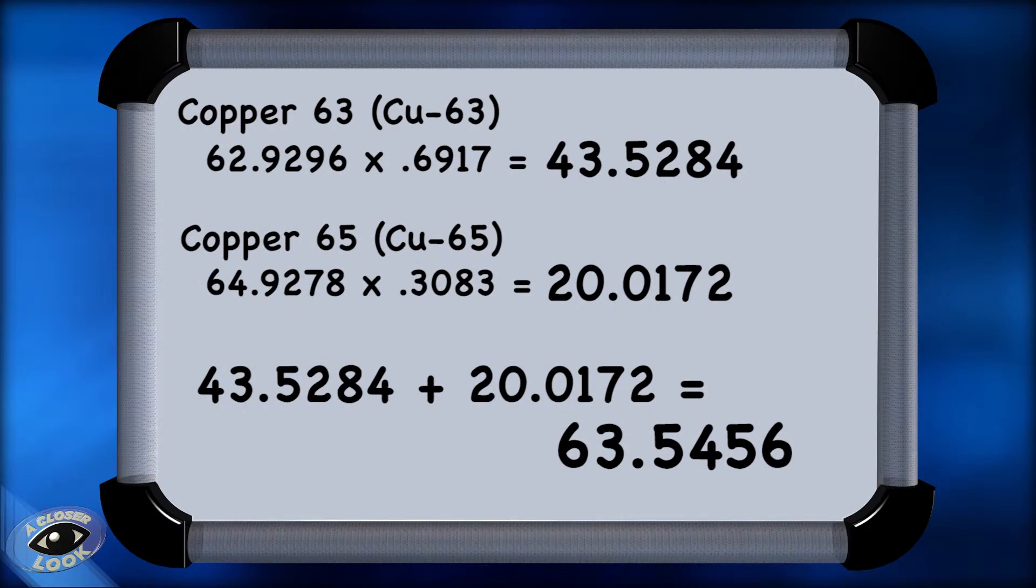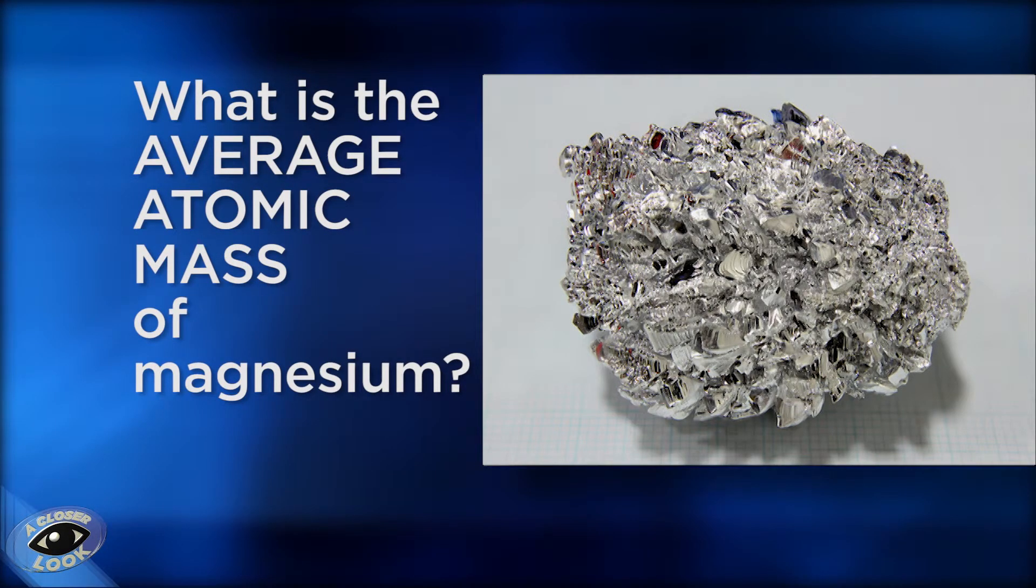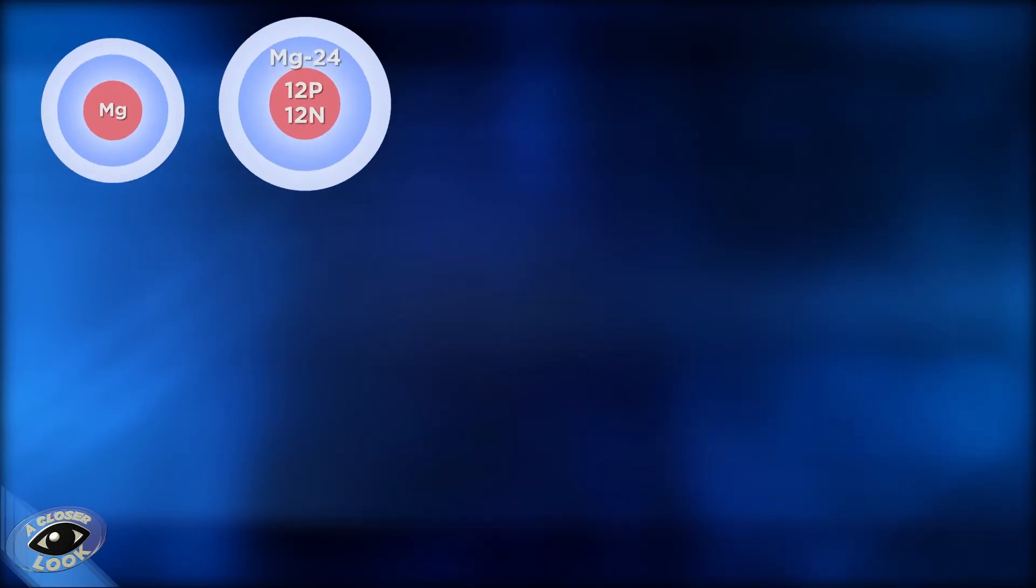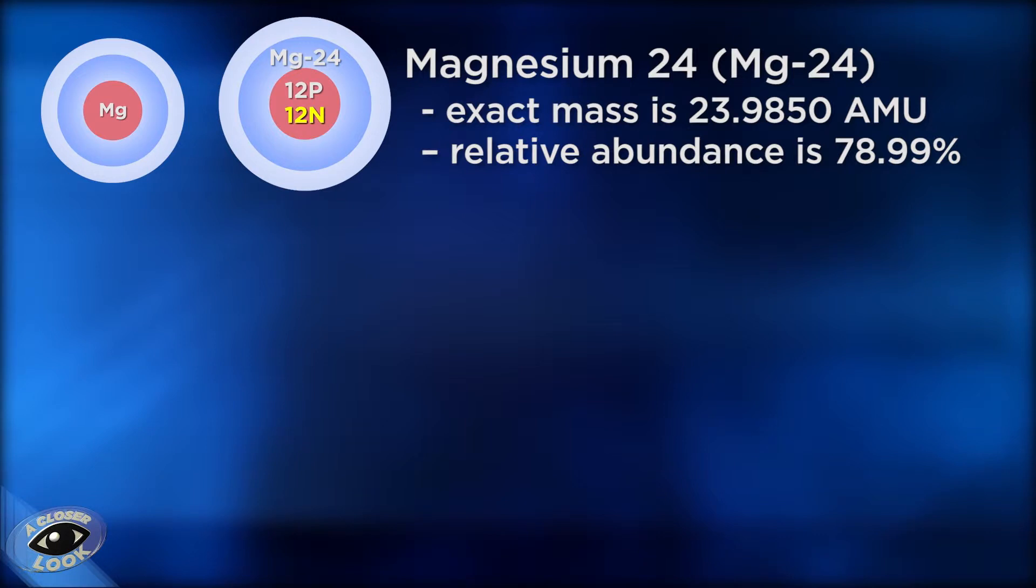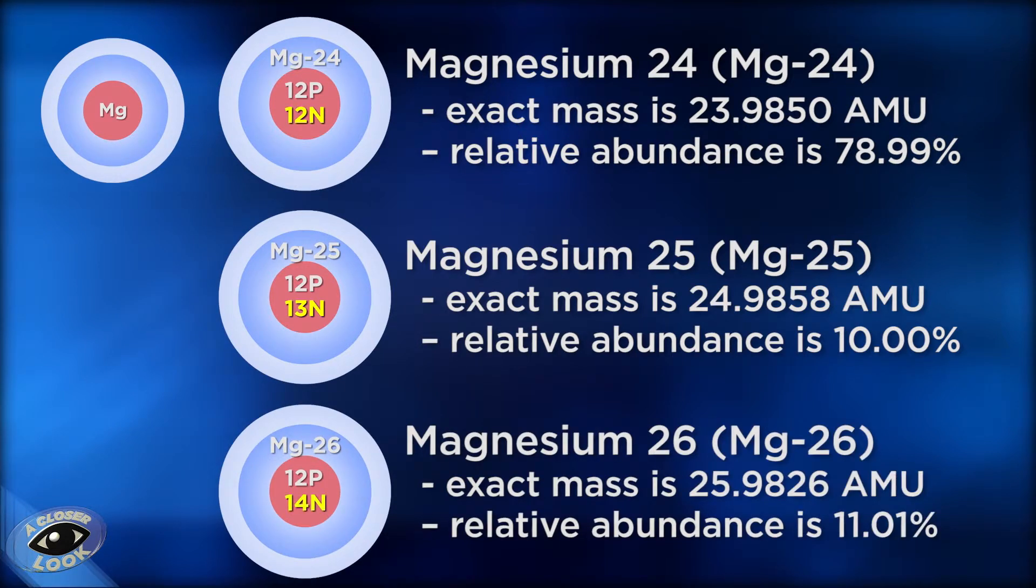We could do the same thing if there were three or more known isotopes for a particular element. For instance, let's do another calculation of average atomic mass, this time for magnesium, which has three known isotopes. They are magnesium-24, which has a mass of 23.9850 and an abundance of 78.99%, magnesium-25 with a mass of 24.9858 and an abundance of 10.00%, and magnesium-26 with a mass of 25.9826 and an abundance of 11.01%.